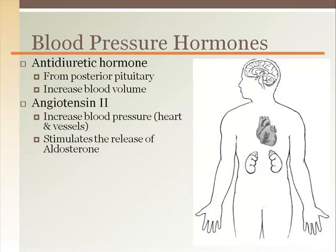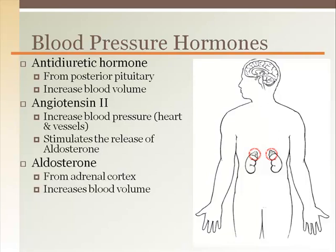Angiotensin 2 increases blood pressure by vasoconstriction of arterioles and increased cardiac contraction. It also stimulates thirst, thereby increasing blood volume. In addition, angiotensin 2 stimulates the release of aldosterone from the adrenal cortex.